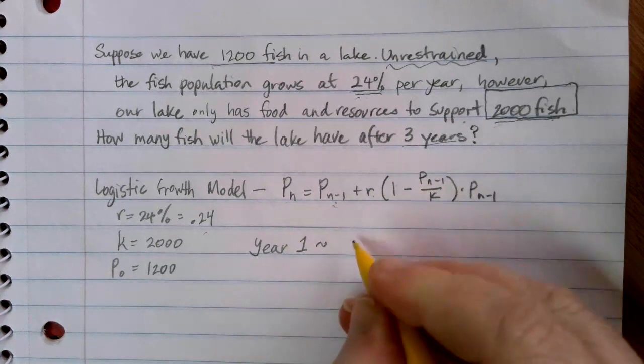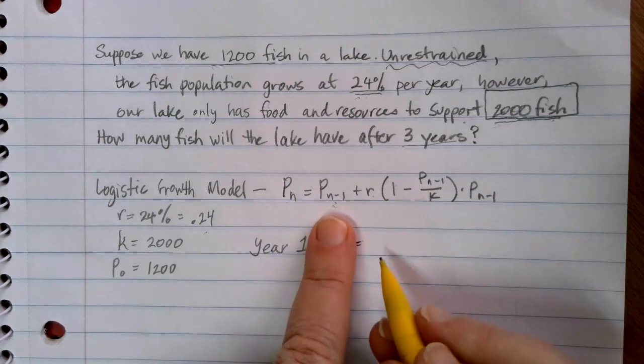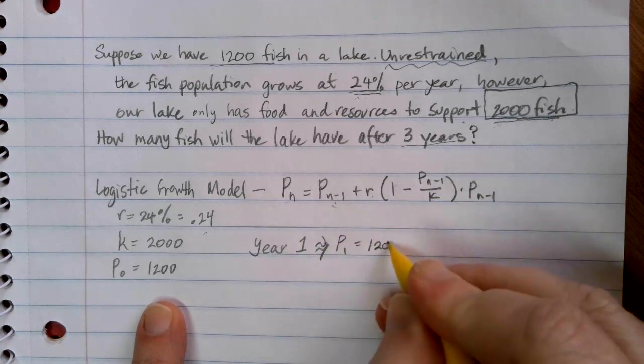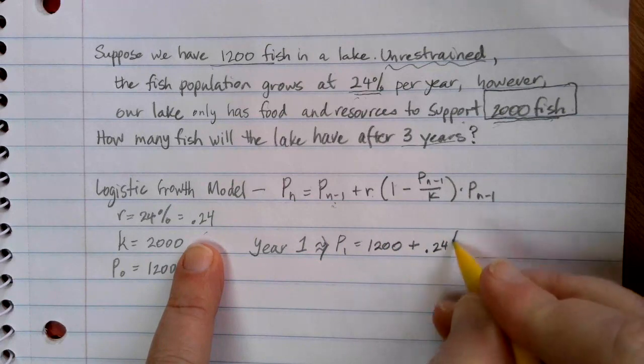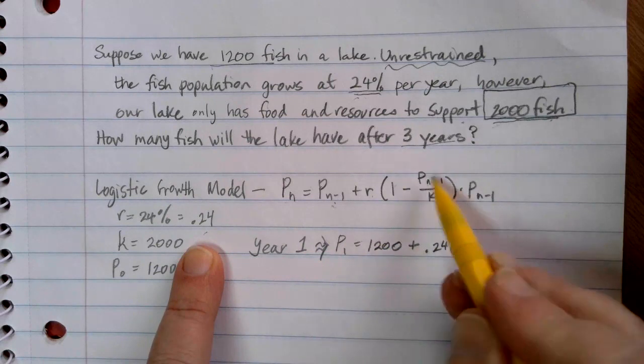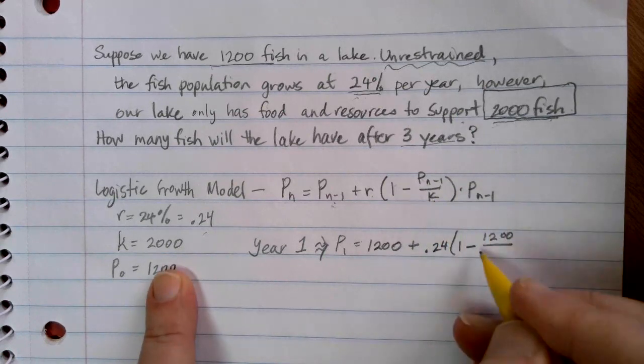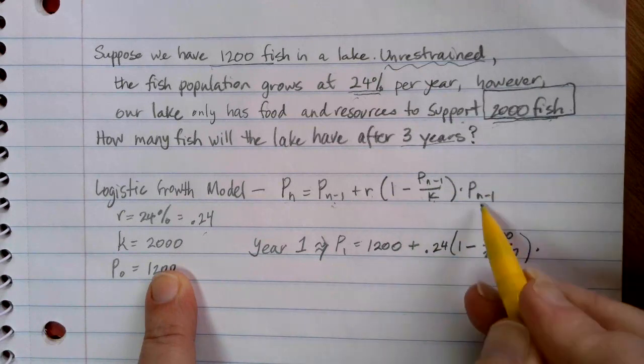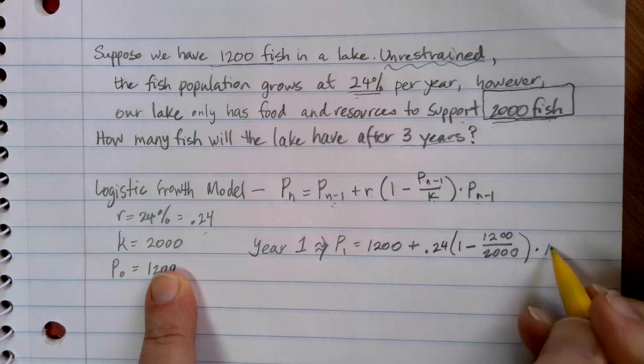All right. So if I'm trying to find year one, I'm looking for P_1, and I'm going to put my starting value, the one value that I know. In this case, that's my 1,200 fish, plus my rate, 0.24, times one. Make sure that's a minus there. Then it's P_(n-1) again. So our previous year's population, that's the 1,200 again, divided by my limiting factor, that K value, which was 2,000. Then we're going to close the parentheses, and we're going to times by that previous year's population again, and that 1,200 shows up again.